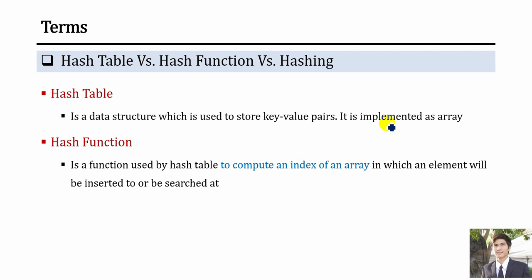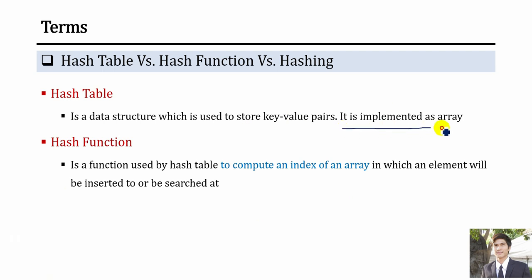A hash table is a kind of data structure used to store key-value pairs and it is implemented as an array. If you look in more detail, to solve the collision and data duplication problem, it also integrates a linked list inside the array. Behind the hash table, it actually uses a hash function in order to compute the index of an array into which an element should be inserted.